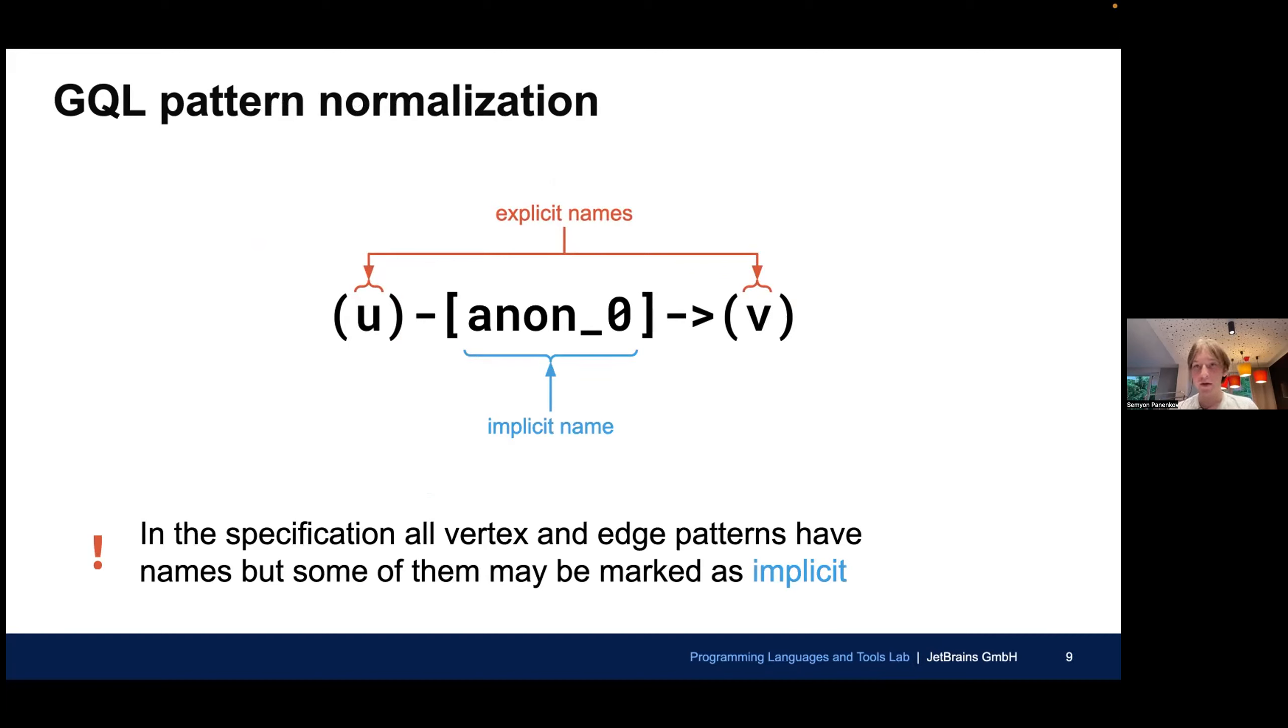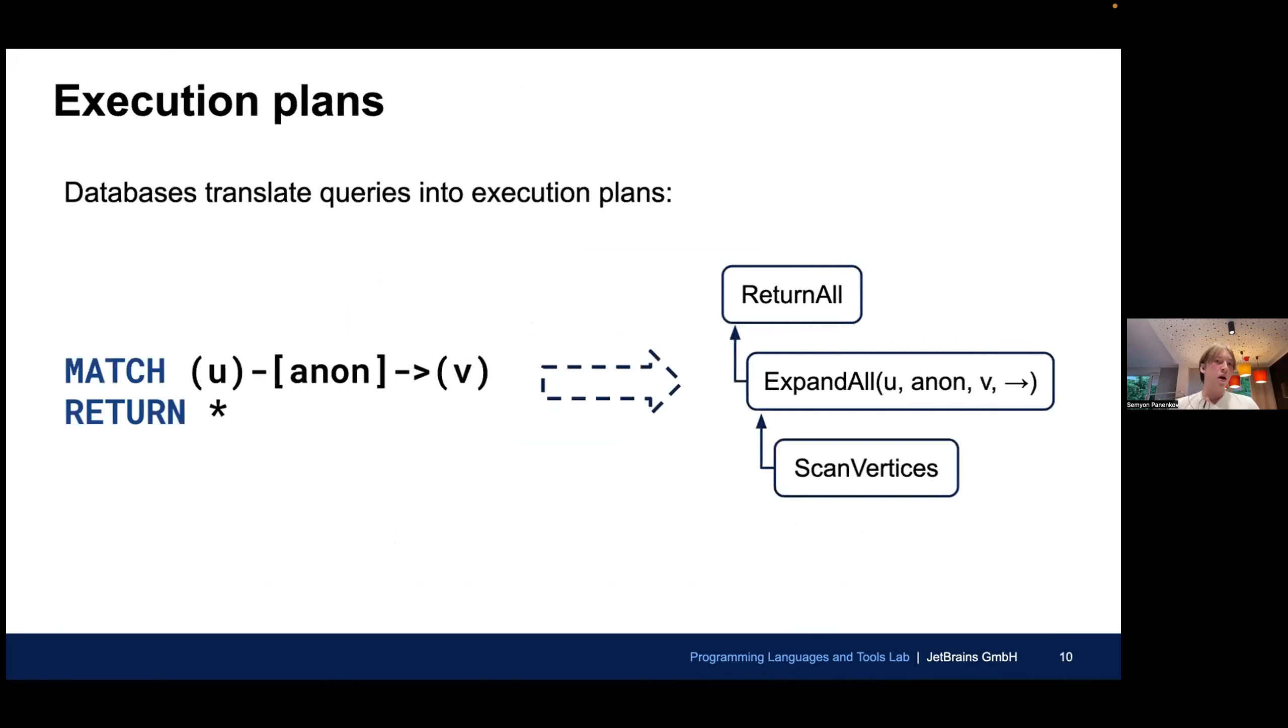We assume that the queries we receive have already been normalized. And we reason in abstract syntax. If you take into account the declarative nature of the GQL, which implies that queries only specify what data is required, but not how to fetch it, and the database has to figure it out.